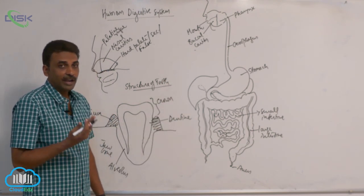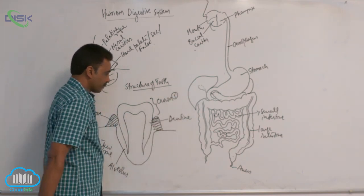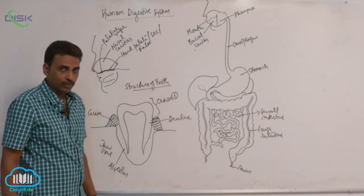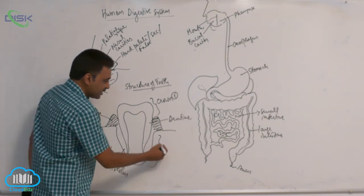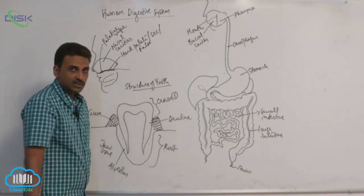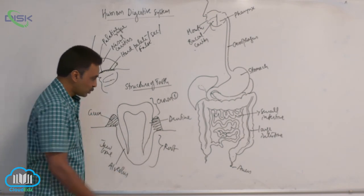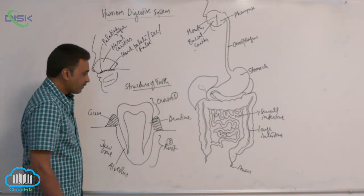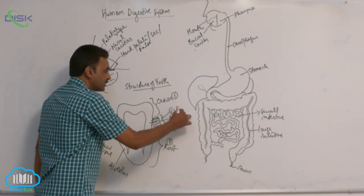A tooth has got three parts. The part which is exposed outside is called crown. The part which is embedded inside the alveolus — inside the jaw bone — is called root.